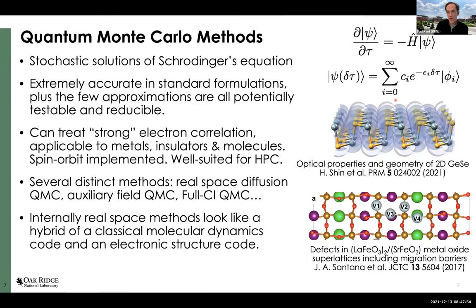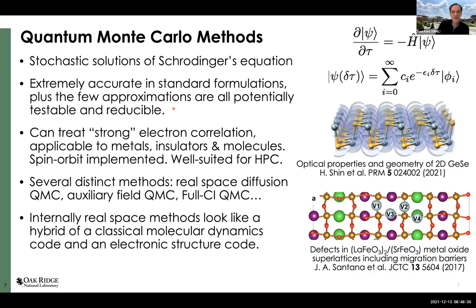Quantum Monte Carlo is the umbrella name for methods that solve Schrödinger's equation stochastically. They're interesting because they are very accurate out of the box. We and other groups have shown fairly recently that all the approximations in them — and there are only a couple — can both be tested and systematically reduced, at least in simple enough systems. So you have potential for a convergent method. You can treat metals, and we've added spin-orbit recently. Of course, this is an expensive calculation because we're asking a difficult question, but that also makes it in principle well suited for high performance computing.